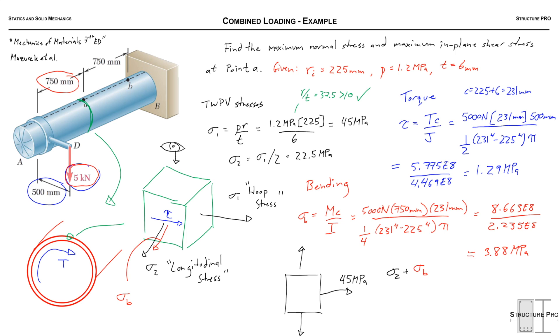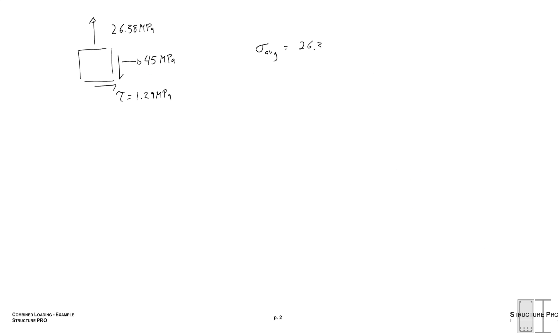with the bending stress, so we'll add those two together to figure out their effect. So that's 3.88 plus 22.5, or 26.38 MPa. And then finally we have our shear stress, 1.29 MPa. So we can draw all three of these stresses on our element and now we're ready to move forward with our Mohr's circle calculations to find this maximum normal stress and maximum in-plane shear stress.